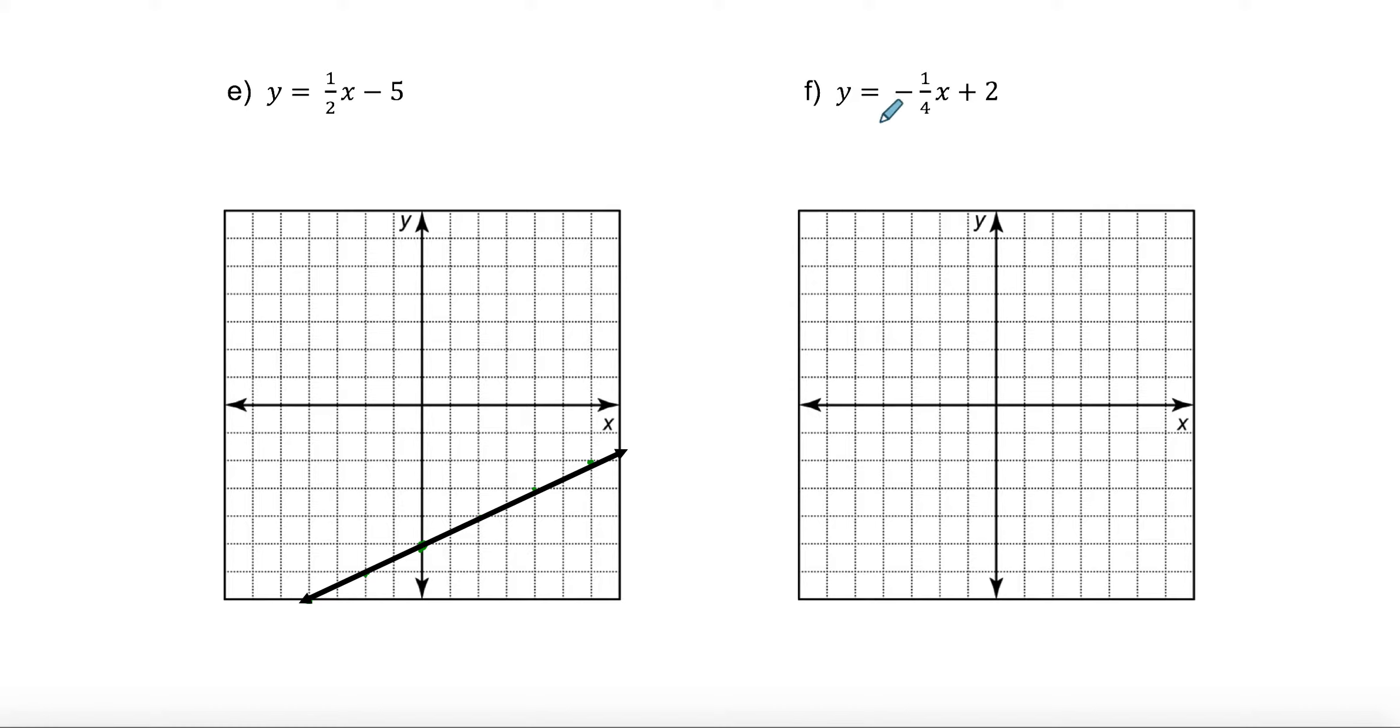And this one, y equals negative 1 quarter x plus 2. Remember that they could be written as y equals 2 minus 1 quarter x, which is the exact same thing. I know that this is my y-intercept because it's the number that doesn't have a variable beside it. So I'm going to go to 2 and start there. Then I'm going to go down 1 and over 4. It's kind of like this is just directions. It's giving you directions on where your line should go. This is always rise over run for your slope.